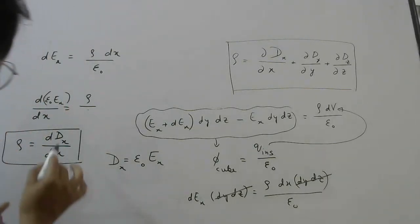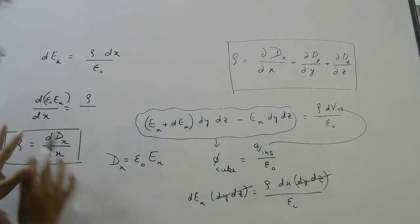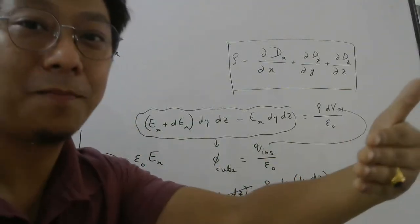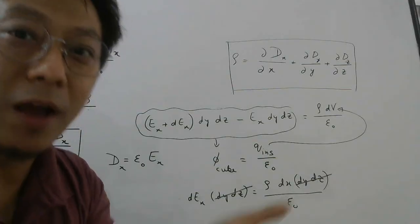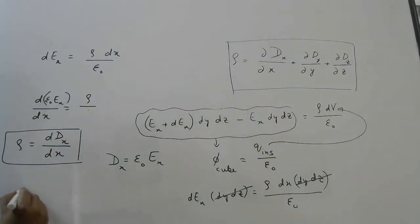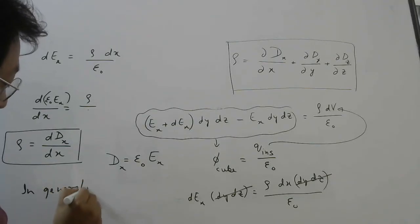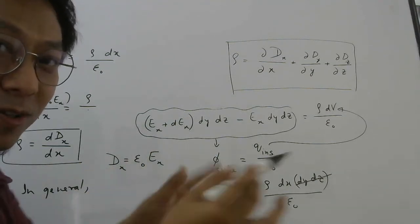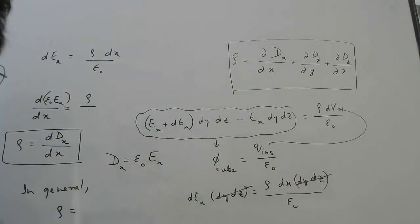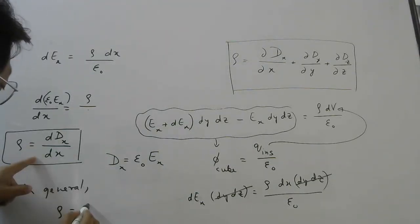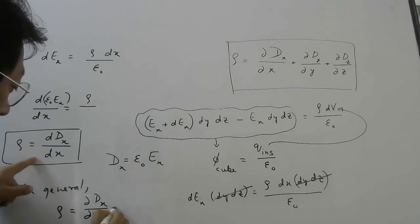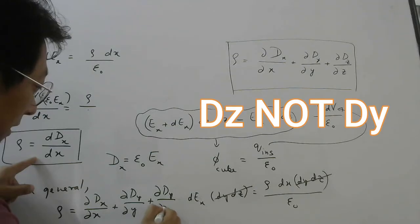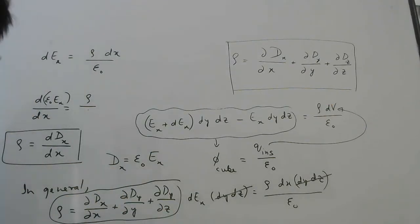This formula is very similar to what we used. But this is the 1D case — when electric field varies only along x. In general, electric field can vary along y and z as well, so D will also vary along y and z. In that case we have to write: ρ = ∂Dx/∂x + ∂Dy/∂y + ∂Dz/∂z. That is how the full formula comes.